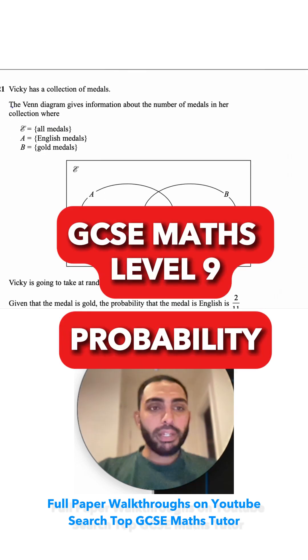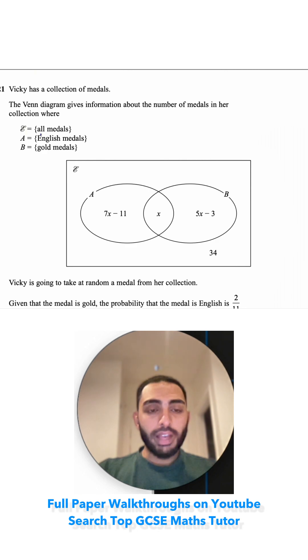Question 21. Vicky has a collection of medals. The Venn diagram gives information about the number of medals in her collection where the set is all of the medals. A is equal to the English medals. I'll just write that to remember. And B is the gold medals.